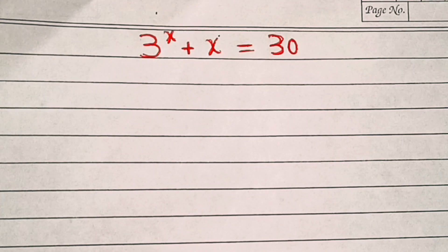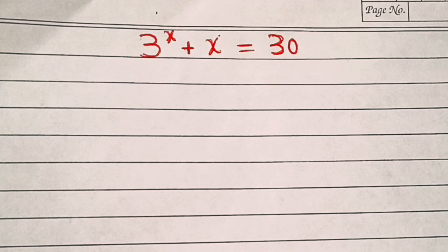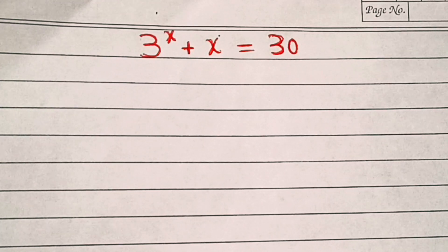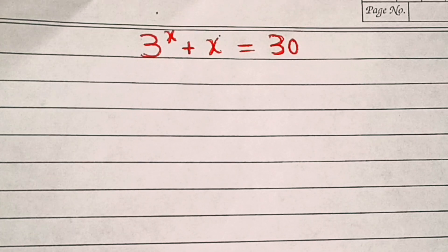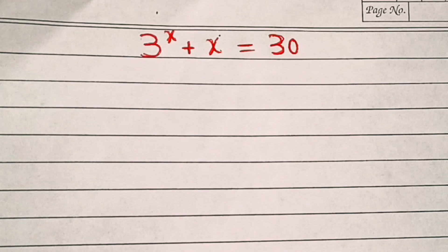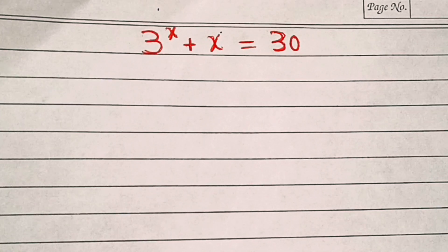Hi everyone, we have 3 power x plus x equal to 30. So how to solve this? The best way to solve these type of equations is by using the Lambert W function or Omega function. So let's start.